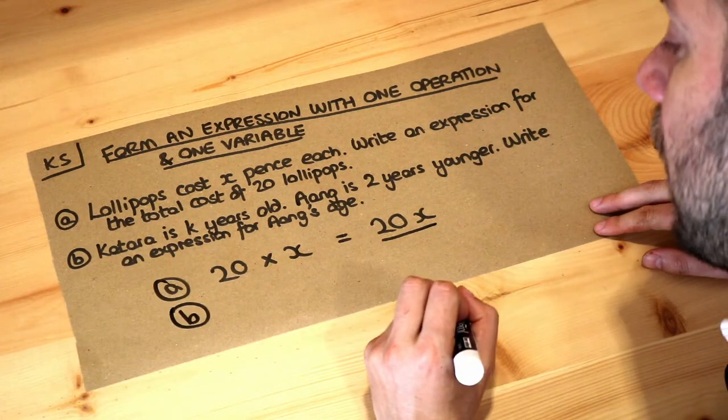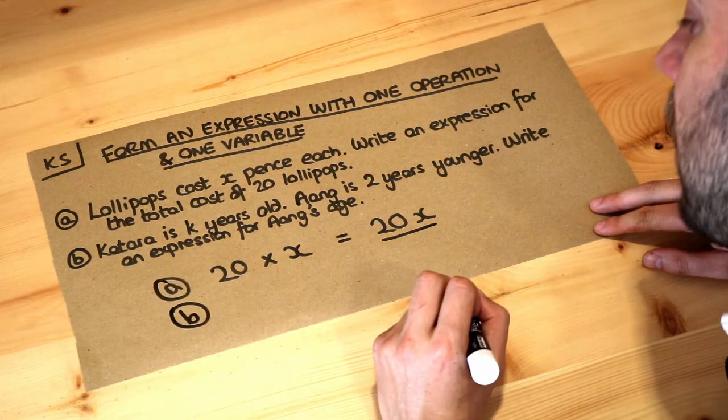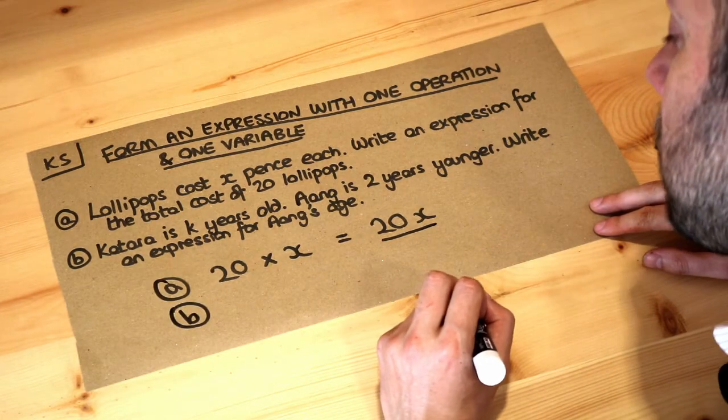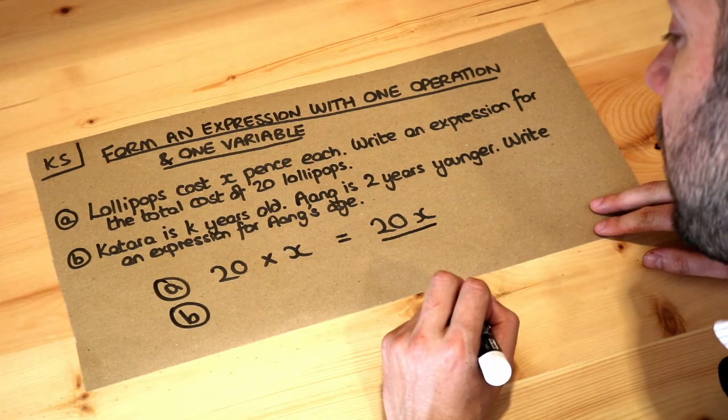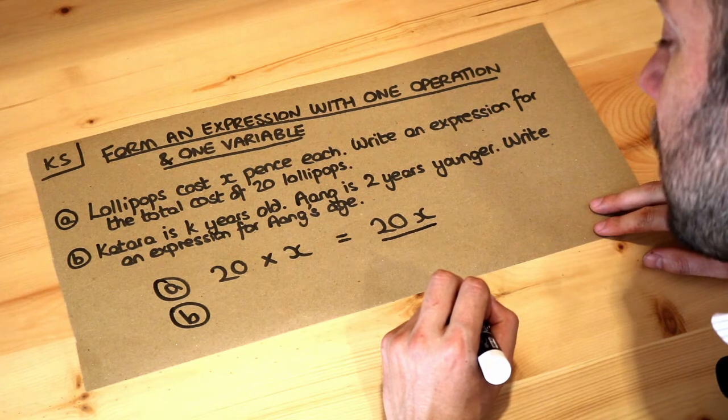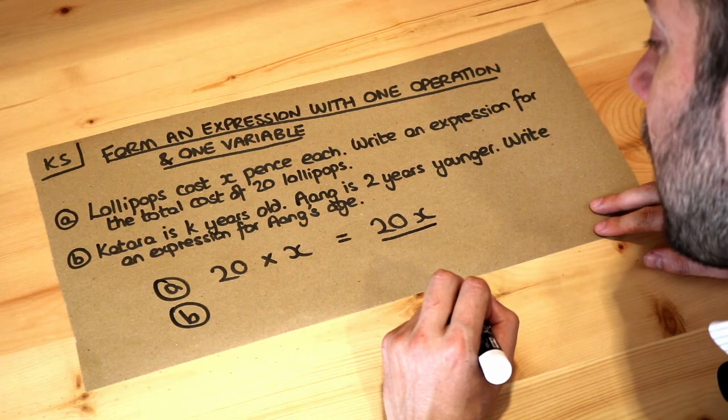What about part b? Katara is k years old. Ang is two years younger. Write an expression for Ang's age.